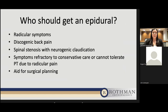Who should get an epidural? Patients with radicular symptoms are good candidates. If they have discogenic pain — pain coming from the disc itself or a tear in the outline of the disc — it can sometimes be helpful. Or if they have spinal stenosis with neurogenic claudication — narrowing of the spinal canal or along exiting nerve roots causing leg heaviness, with relief when bending forward — that may also be a good indication. We also consider epidurals for patients whose symptoms are refractory to conservative care or who are unable to tolerate physical therapy due to radicular pain.